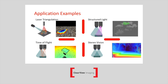Thinking about application examples — it's fair to say any one of these could be flipped around a little. It could be possible to use time of flight for bin picking and structured light for volumetric measurement, but these are typically the sweet spots: laser triangulation is very good for surface analysis and surface defect detection; structured light is often used for bin picking applications; time of flight is ideal for volumetric measurements and logistics; and stereo vision could be used for autonomous vehicles, volumetric measurement, or even bin picking.